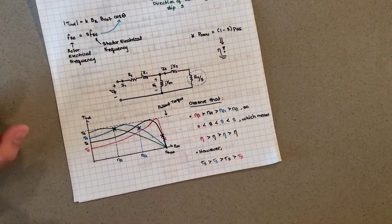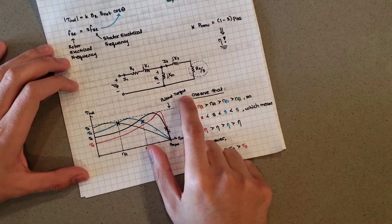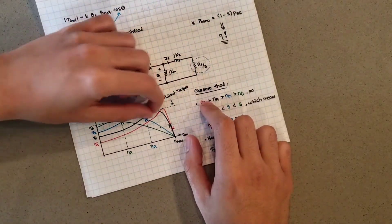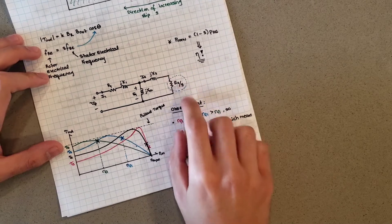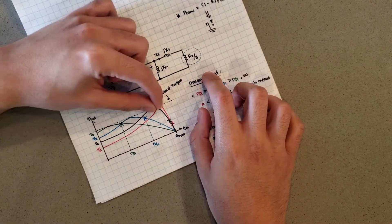What does that mean, pulling these curves? What you'll actually find is if you had a bunch of motors with the same pullout torque and same synchronous speed, then the only thing that varies between them is this r2 value. By changing the r2 value, I can actually vary where this peak occurs, which is something that's super useful.